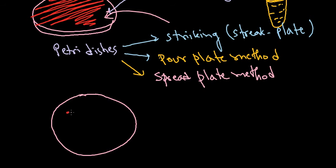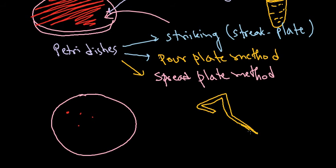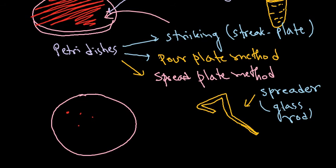For the spread plate method, after placing the inoculum as drops, you take a spreader, which is made of glass — a glass rod bent into a specific shape. Different shapes and structures of spreaders exist, but typically it looks like a bent glass rod. You then use this spreader to spread the drop of culture across the media.